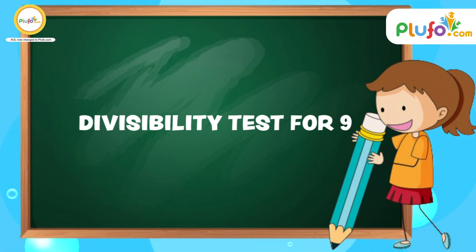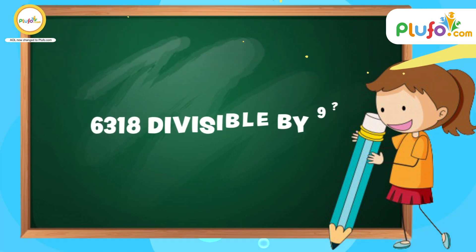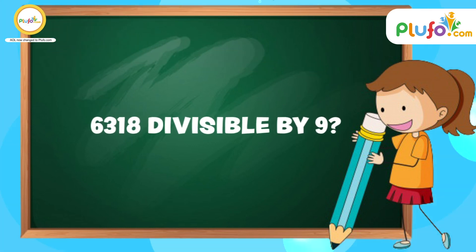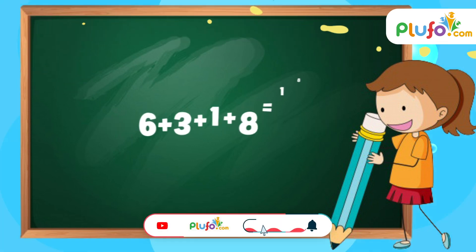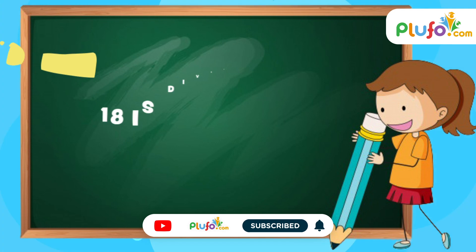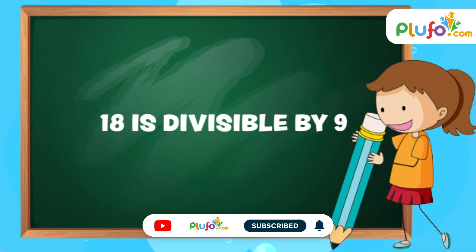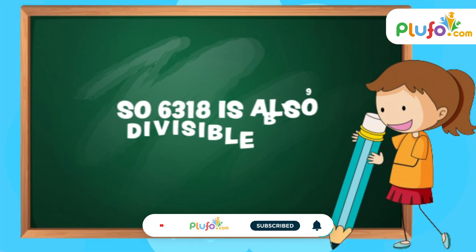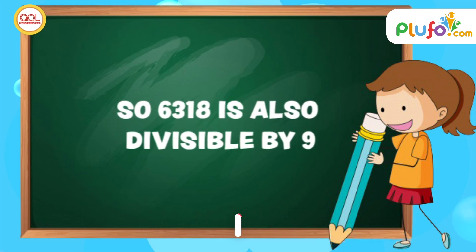Do you know what the divisibility test for 9 is? If I give you the number 6380, can you tell me if this number is divisible by 9? You just have to add the sum of the digits — if the sum of the digits is divisible by 9, then the number is also divisible by 9.